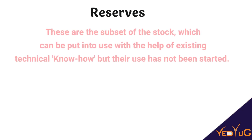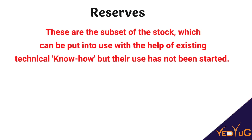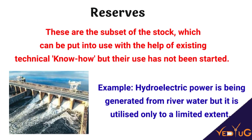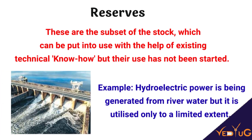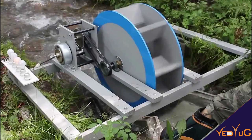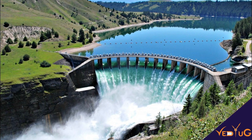Reserves are resources set aside that we will definitely use one day because we have the technology to use them. We can say reserves are a subset of stocks. For example, hydroelectric power is generated from river water — that water is used for generating power and can also be used for other purposes.